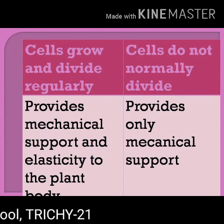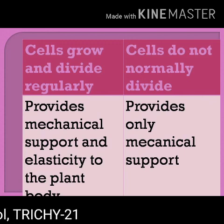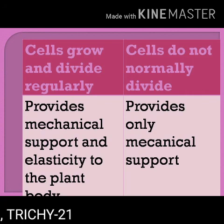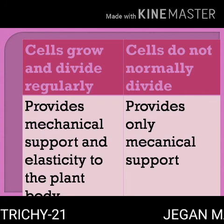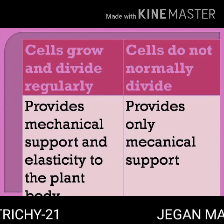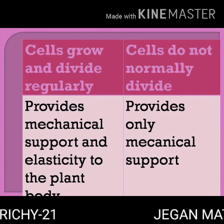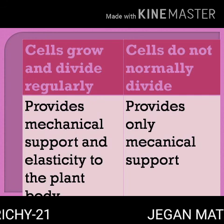Meristematic tissue provides mechanical support and elasticity to the plant body. Permanent tissue provides only mechanical support.